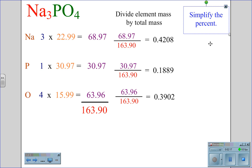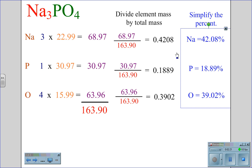I now will simplify the percent by moving my decimal two places to the right, and get sodium's percent composition at 42.08%. Phosphorus has a percent composition of 18.89%, and oxygen has a percent composition of 39.02%. Thank you.